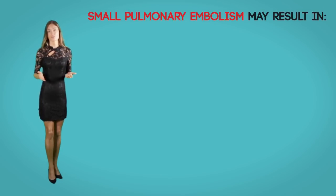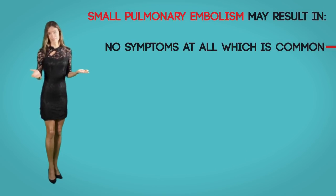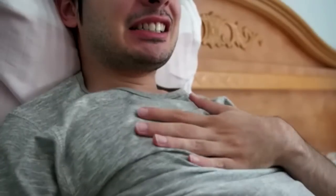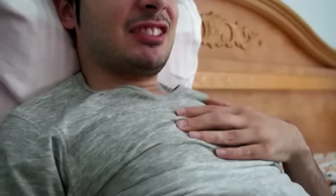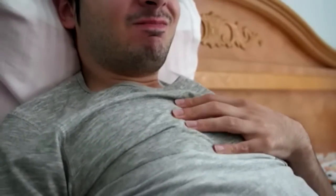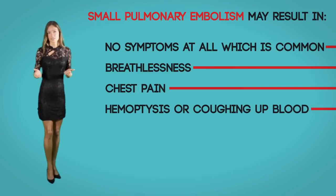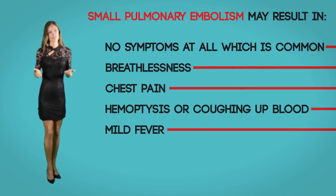Signs and symptoms of pulmonary embolism are usually sudden in onset and may depend on the size of the clot, the present health status of the individual, and how well the lungs can manage the clot. Small pulmonary embolisms may result in no symptoms at all. Symptoms can include breathlessness ranging from very mild to severe, chest pain which may be pleuritic due to irritation of the pleura, hemoptysis (coughing up blood), a mild fever, and tachycardia.